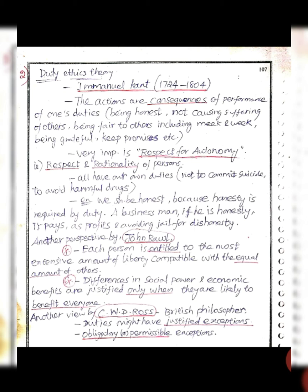We have to respect each other. This is rationality. When we say we have to respect each other, duties include things like: not to commit suicide, and to avoid harmful drugs. These are considered duties.